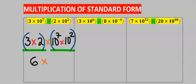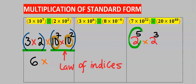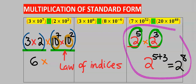For the tens, we apply the law of indices because both bases are 10. For example, 2 to the power of 5 multiplied by 2 to the power of 3 — since the bases are the same, we write 2 and add their powers to get 2 to the power of 8. We apply this to 10 to the power of 7 multiplied by 10 to the power of 2.